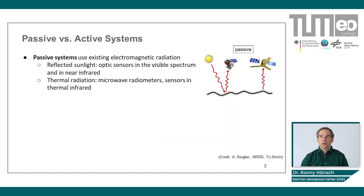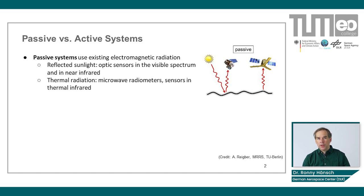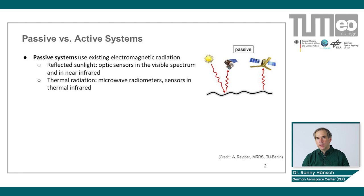Most of you are probably familiar with optical sensors — the cameras in your mobile phones, for example. Those are passive sensors, which means they rely on an external illumination source, mostly the sun. Part of the sunlight is reflected on the surface of the Earth and then reflected towards the sensor, which is basically measuring how many photons of a certain wavelength are entering a certain pixel. Optical images are not the only example; there are also thermal images, radiometers, and so on.